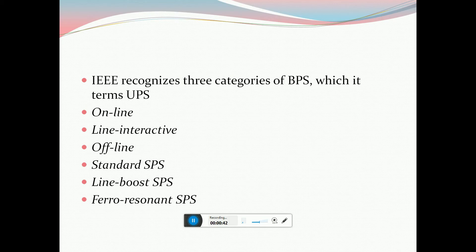The IEEE Institute of Electrical and Electronic Engineers recognizes three categories of UPS: online, line interactive, and offline — also known as Standby Power Supply or SPS — as well as line boost SPS and Ferro resonant SPS.